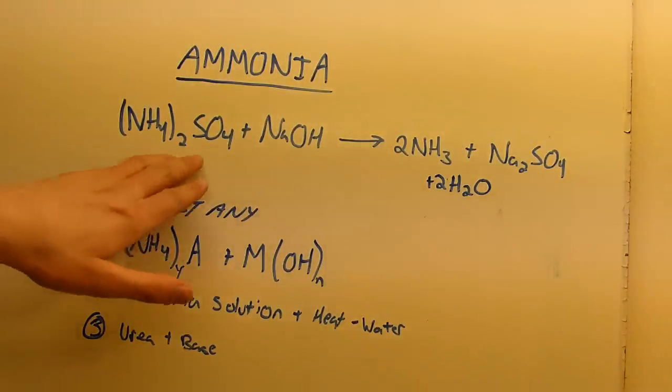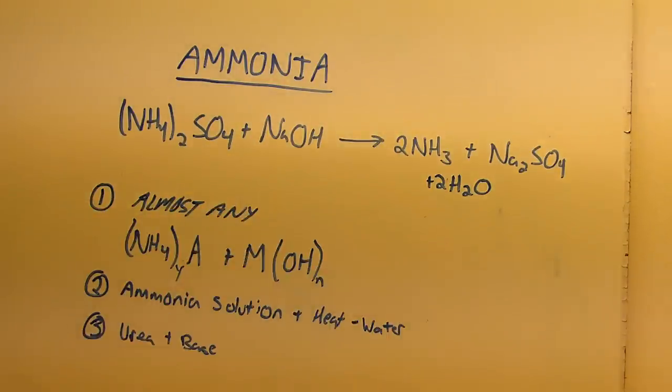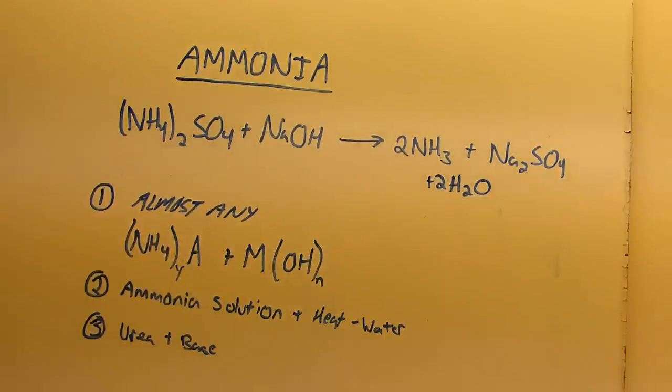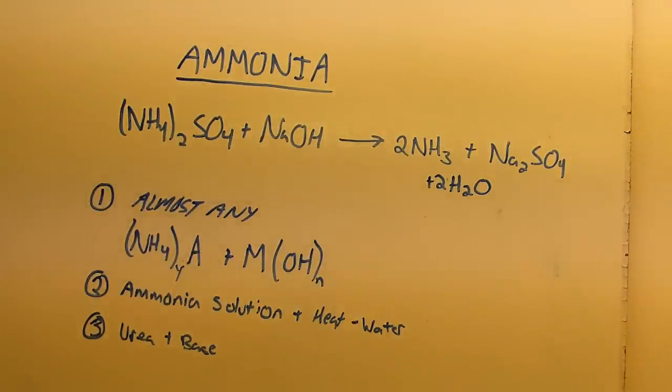My favorite reaction is the reaction of ammonium sulfate and sodium hydroxide to yield ammonia, sodium sulfate, and water. Almost any ammonium salt can work here, like ammonium chloride or ammonium nitrate, but I tend to use ammonium sulfate because it's cheaply sold around where I live as a fertilizer, and unlike ammonium nitrate, it's not regulated.